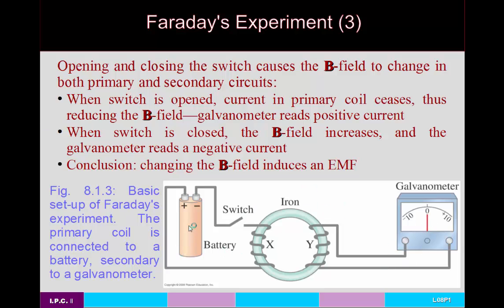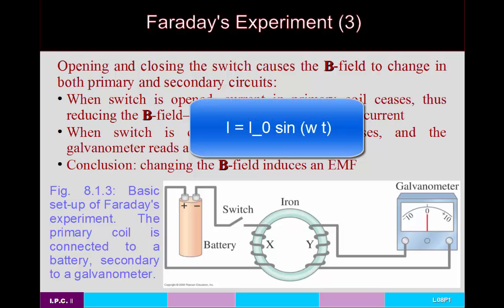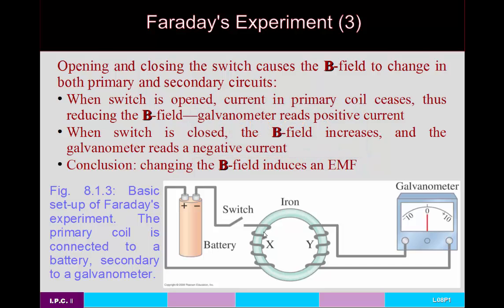Faraday's experiment used a single battery and a switch — a DC source. But you could also imagine hooking up an AC source instead. The current would then change according to I = I_max × sin(ωt), producing a changing current and hence a changing magnetic field. You'd get some induced current in the secondary with interesting changes in the galvanometer reading throughout.